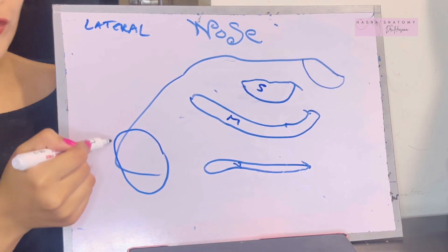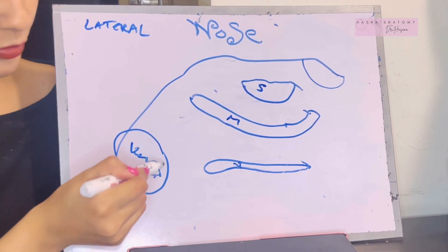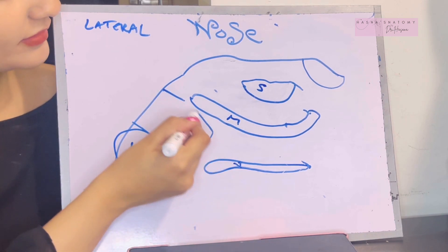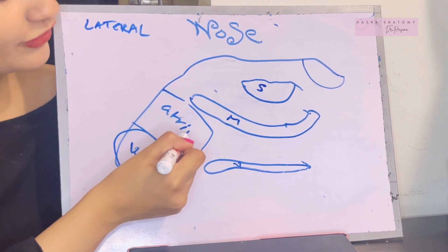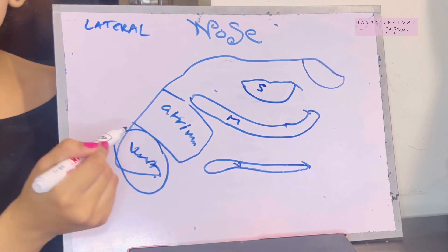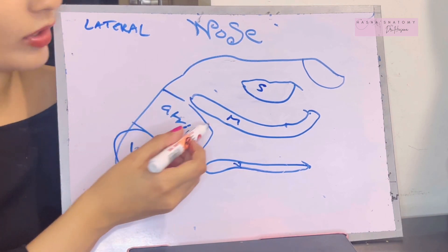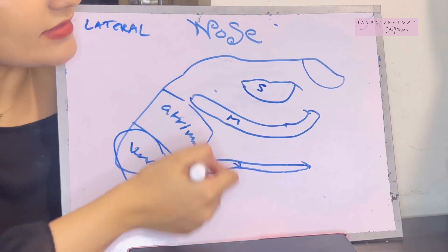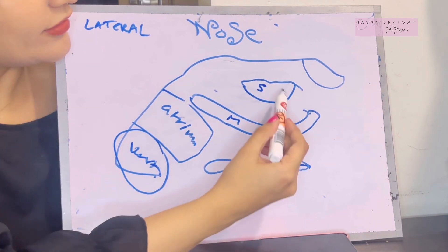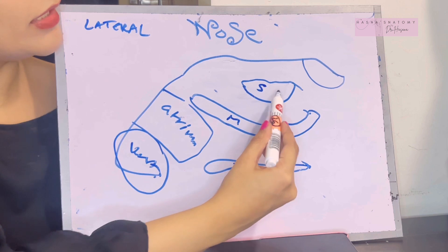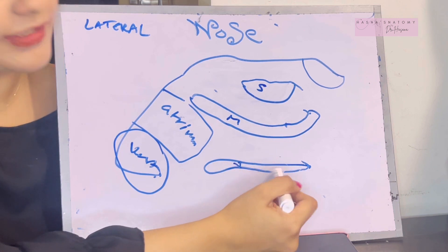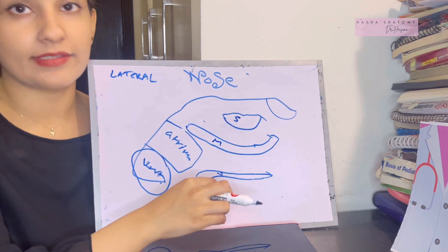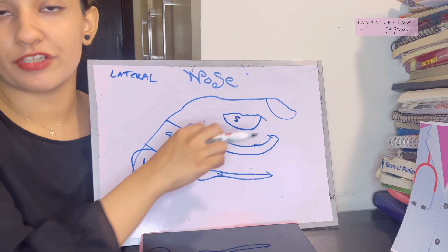The anterior part of your lateral wall is known as the vestibule. Behind that is the middle part, known as the atrium of the lateral wall. And then the posterior part of this entire lateral wall consists of the conchas — the superior and middle are formed by the ethmoidal bone, and the inferior is an independent bone. Let's find out what openings lie within this lateral wall's posterior part.